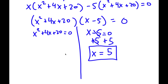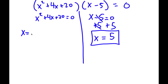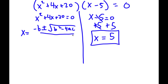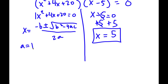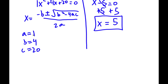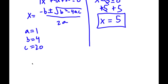For x squared plus 4x plus 20 equals 0, what I'm going to use is the quadratic formula. The quadratic formula, as you guys already know, is negative b plus or minus the square root of b squared minus 4ac, all over 2a. In this case, a is equal to 1, b is equal to 4, and c is equal to 20, because the coefficients in front of these terms are 1, 4, and 20. All I have to do is substitute a, b, and c into the quadratic formula.